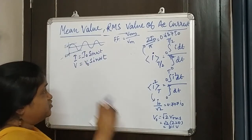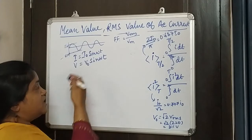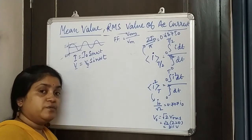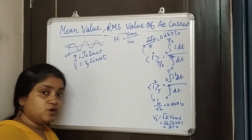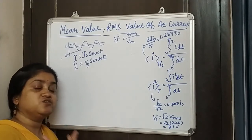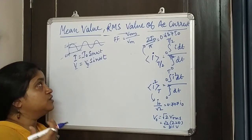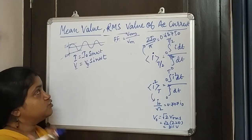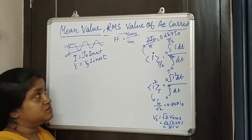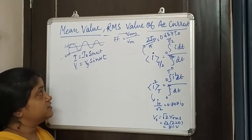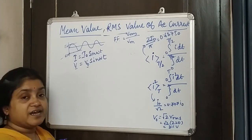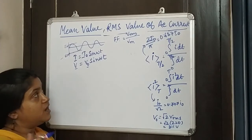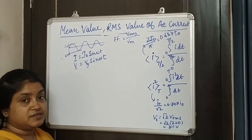So while the maximum value gives us the peak and the instantaneous value tells us the current at any moment, when we talk about the overall voltage or current of AC, we either talk about the mean value or the RMS value of the current or voltage.